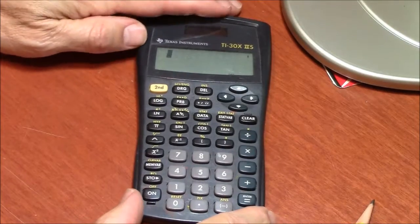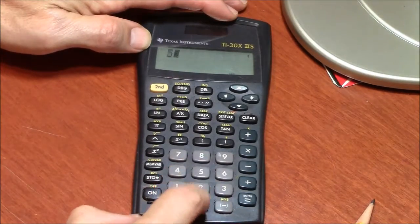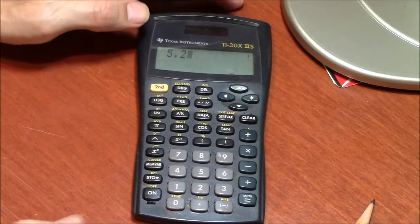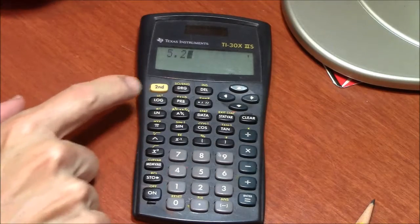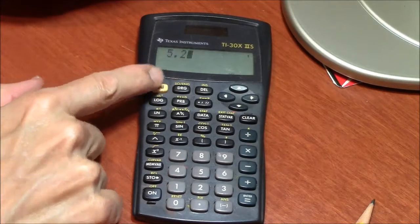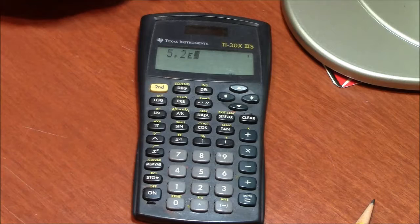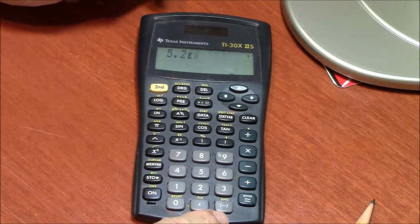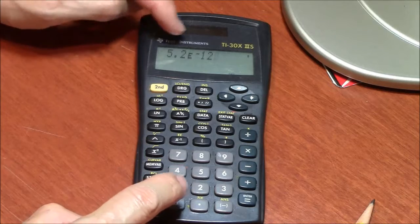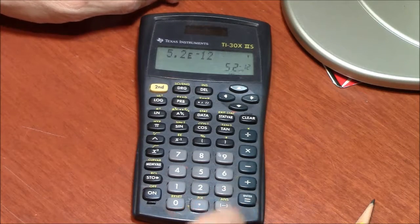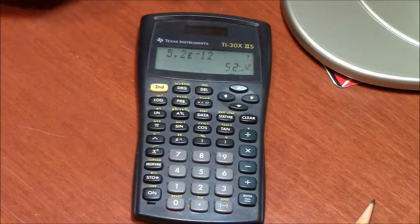Here, I'll try a very small number. 5.2 times 10 to the minus 12. Once again, don't press the X. Use the EE key. Now, the exponent, negative 12. Here's the negative down here. Here's the 12. That is 5 times 10 to the minus 12. It says so here in the corner.